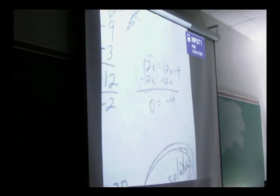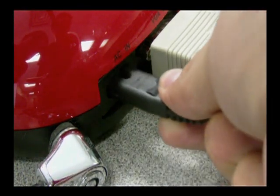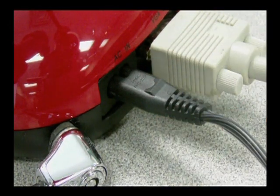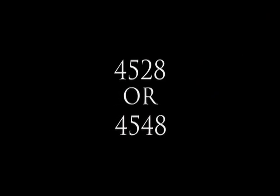Your projected image should also automatically display on the projector screen. If no light is on, this might indicate that the power cord is unplugged. Check to make sure that the cord is plugged into both the document camera and the wall. If the document camera is plugged in and the light is still not on, please call the media department at extension 4528 or 4548 for further assistance.